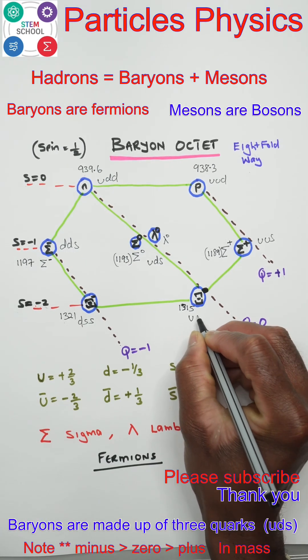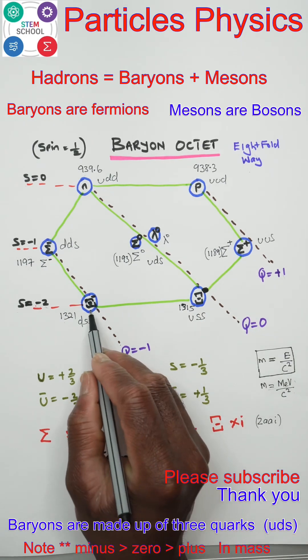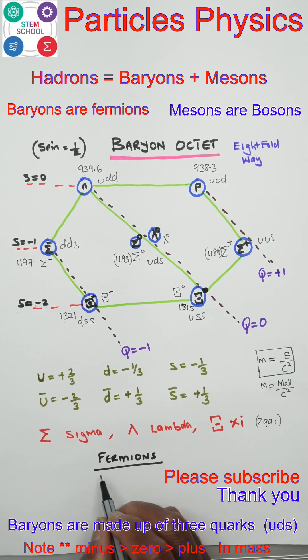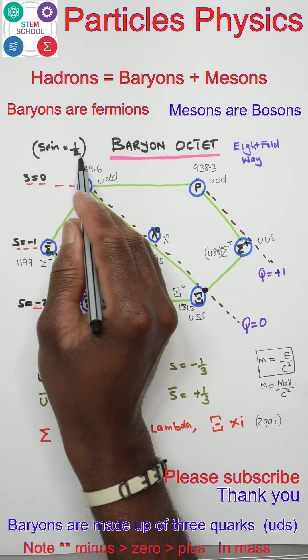This will be USS. This is Xi (or Chi): Xi minus and Xi zero. These are fermions; they have a spin of one-half.